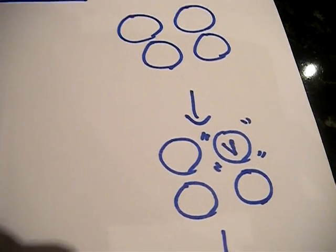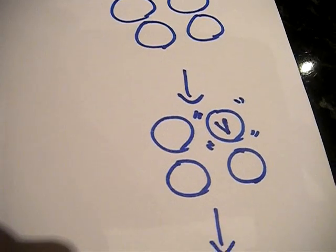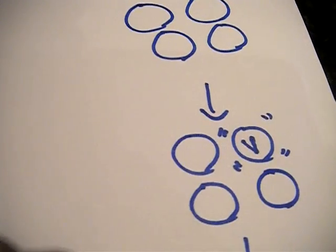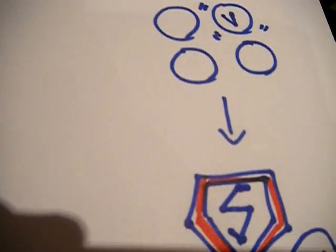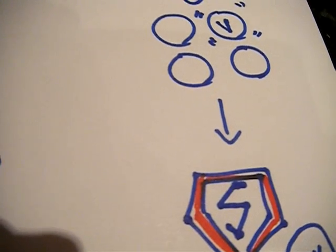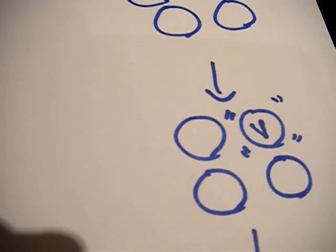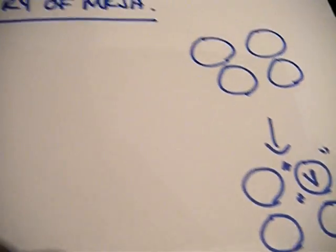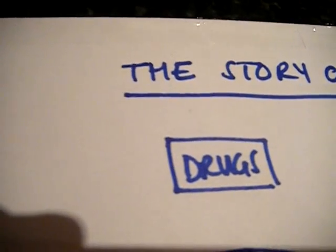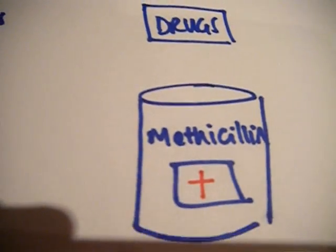And that gives it an advantage over the rest, and that bacteria there becomes a superbug. So it's developed a variation, which means that it can survive all sorts of normal drugs and this really powerful drug, methicillin.